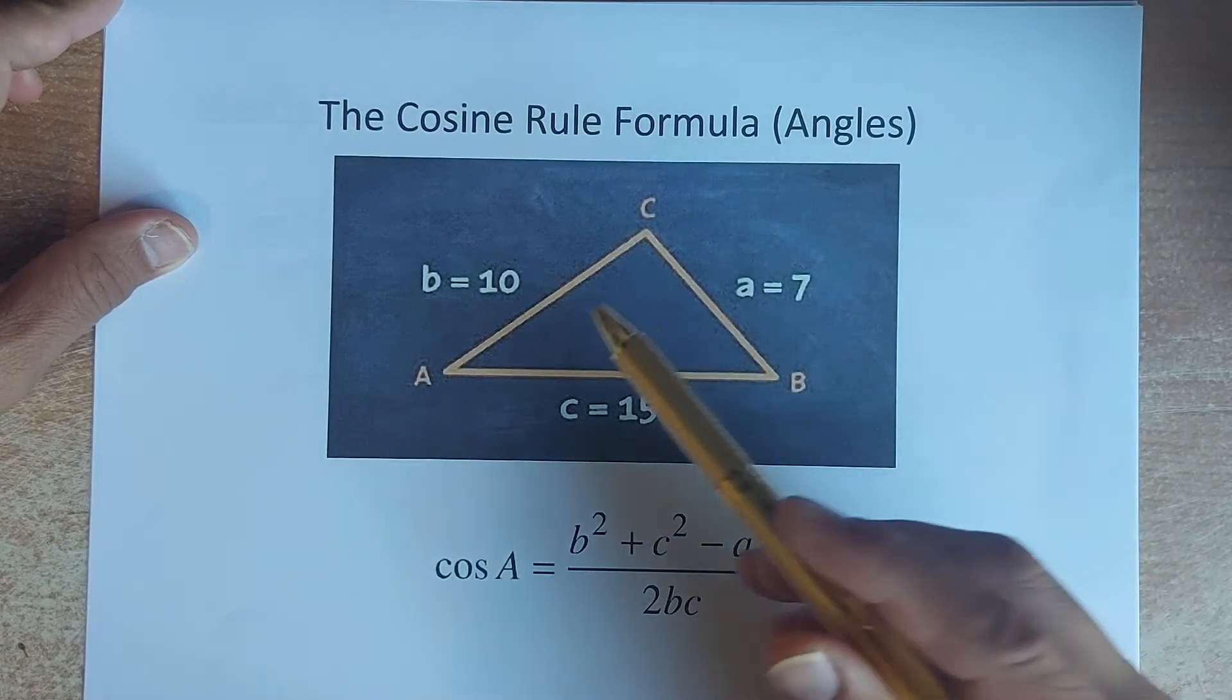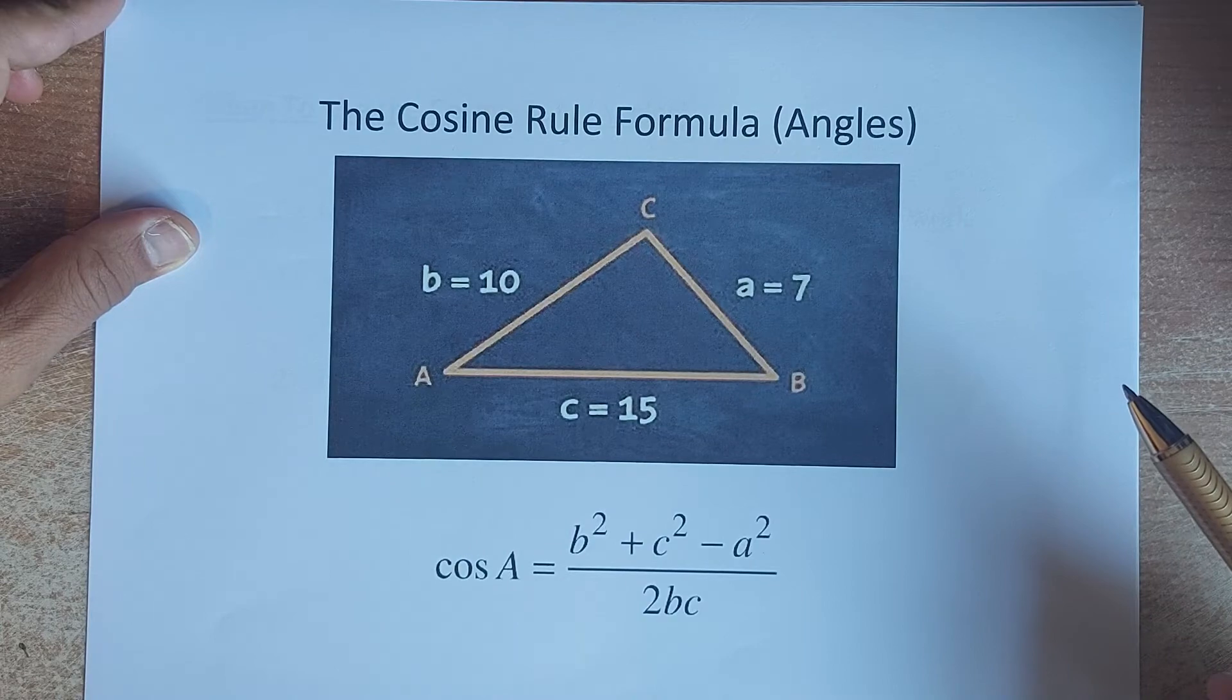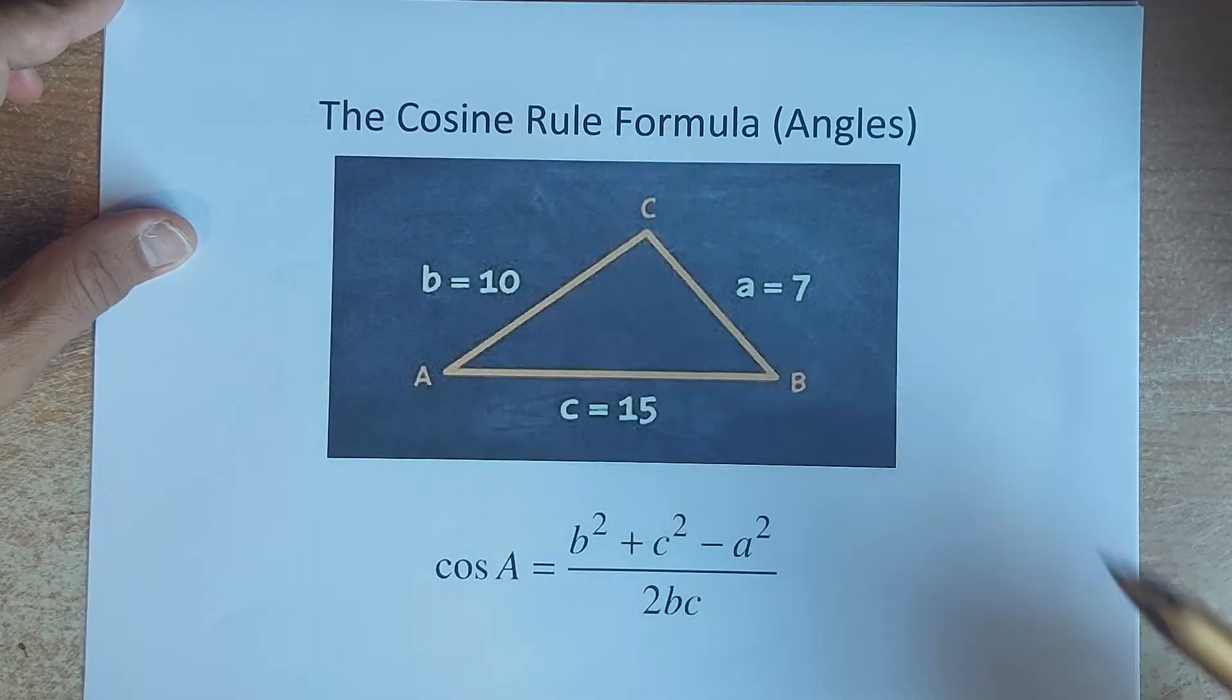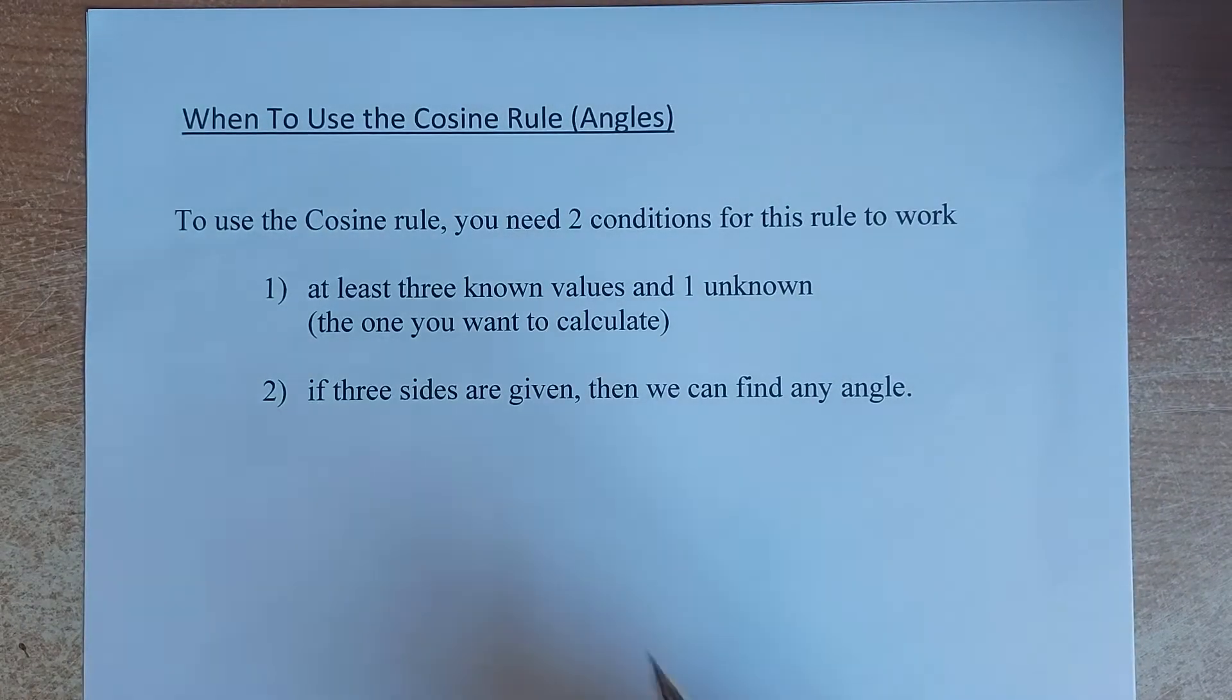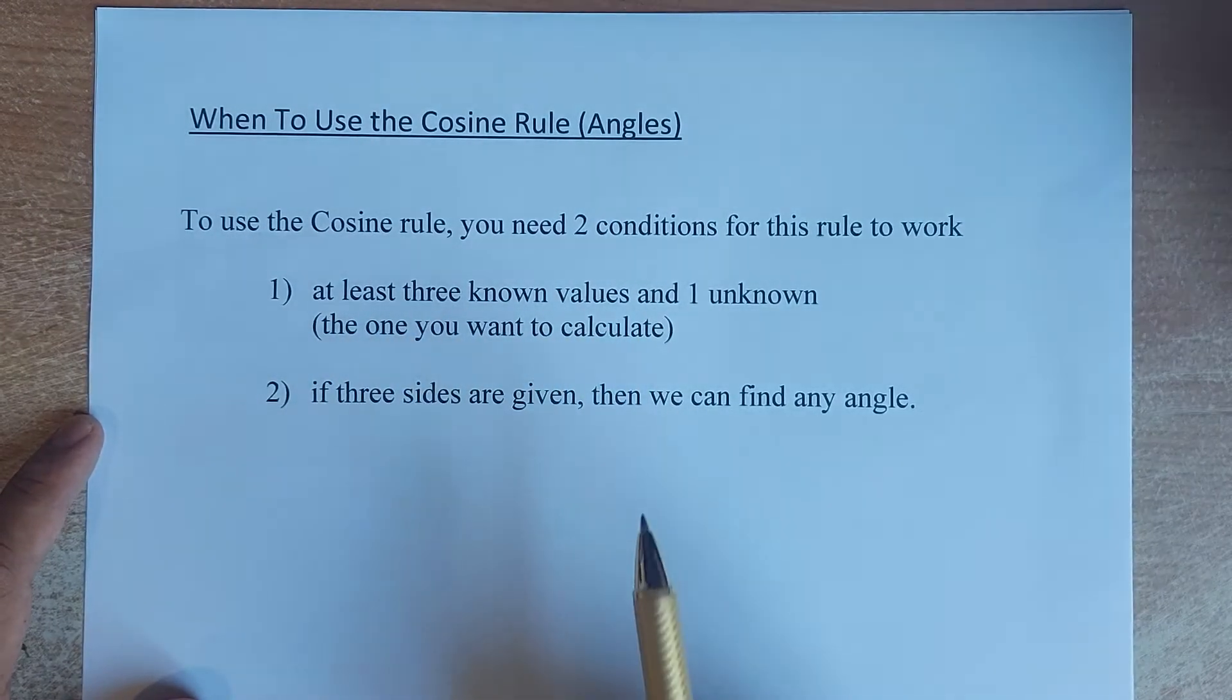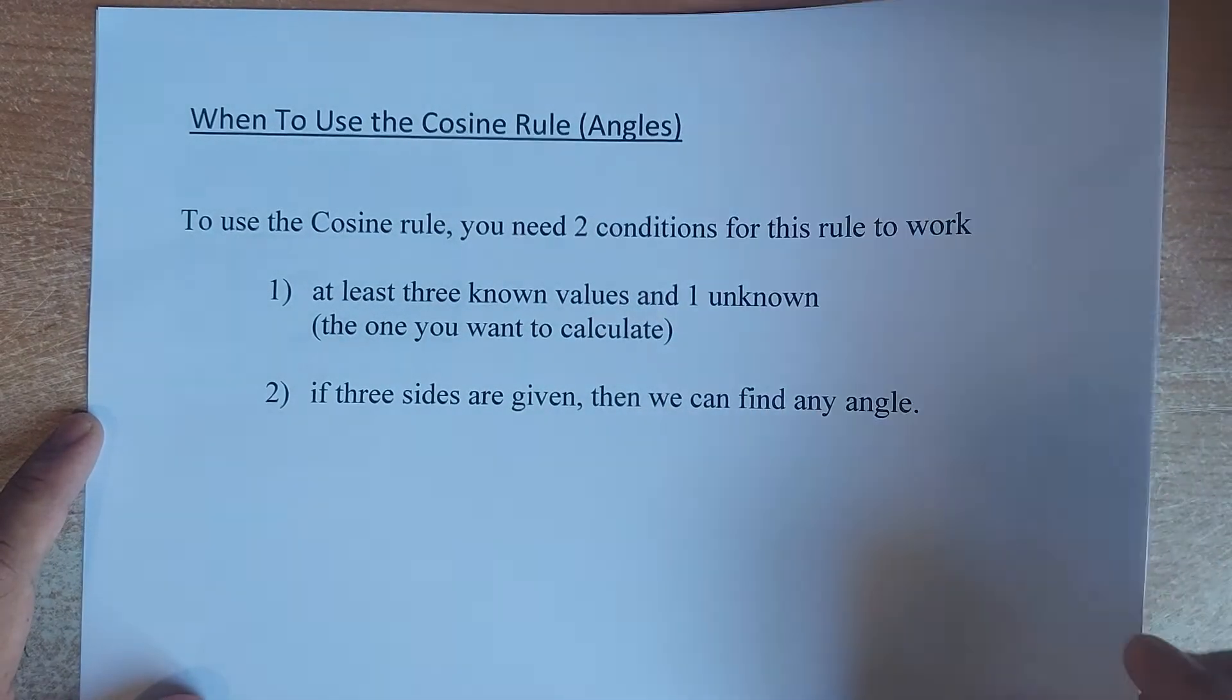To do that, you have the three sides given. And the next rule is that in this particular example, three sides must be given and you need to find one of the angles. So that is the rule for finding the angles using the cosine rule. So again, I repeat, three known values. In this case, all three sides must be known and the unknown will be one of the angles you want to calculate. And if three sides are given, then we can find any angle.